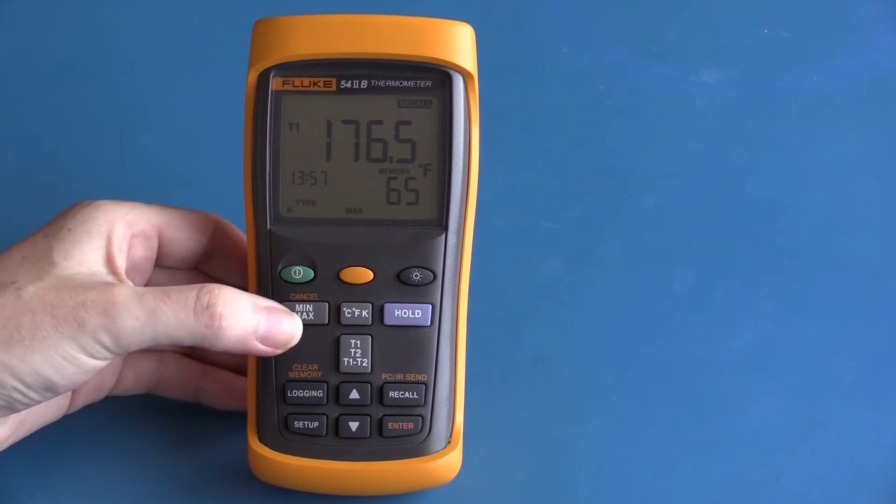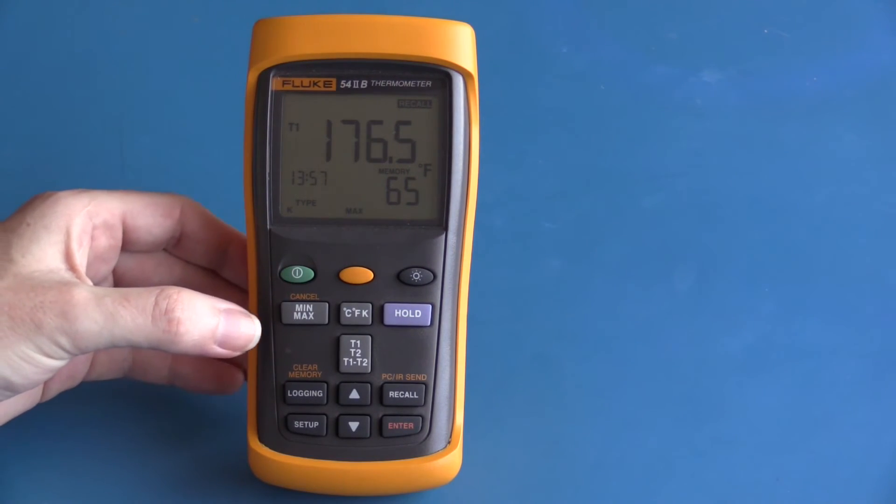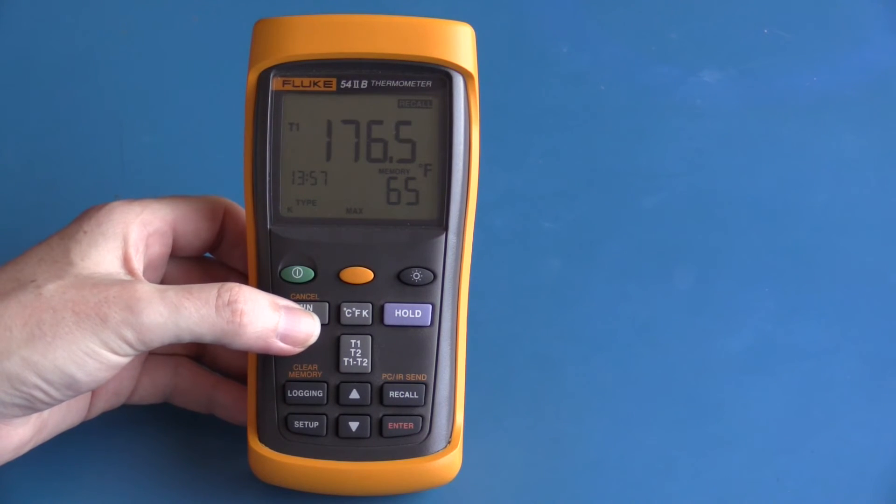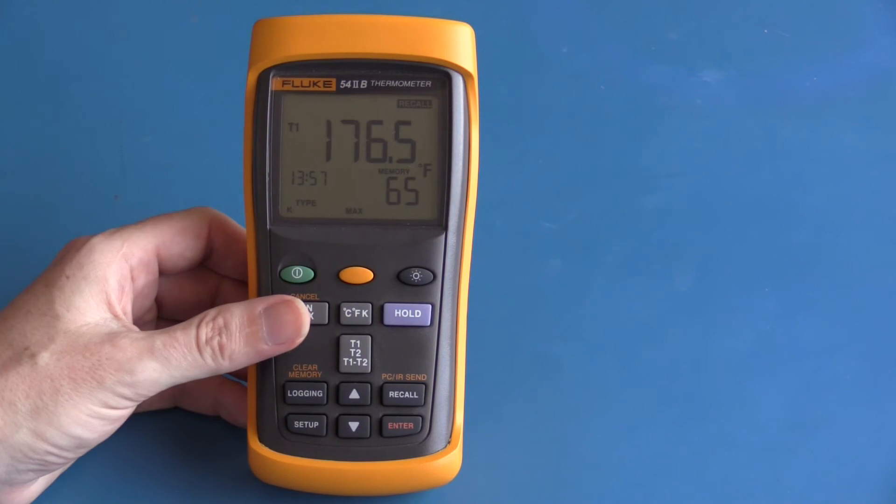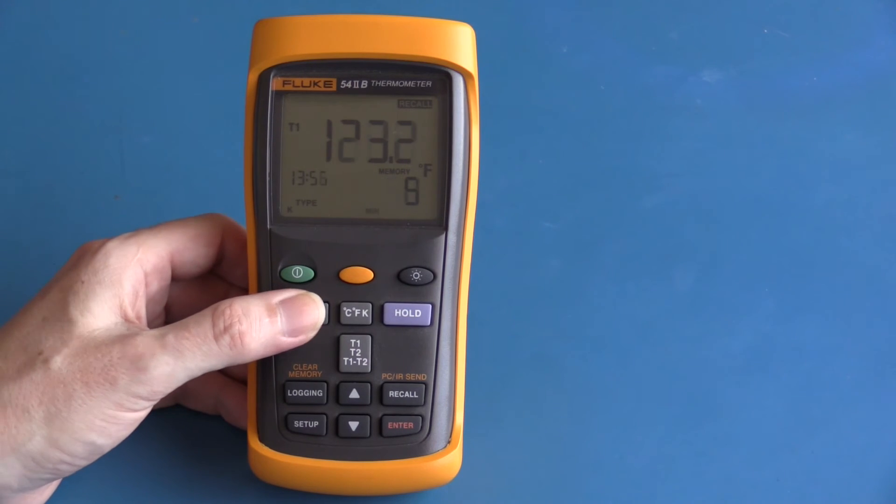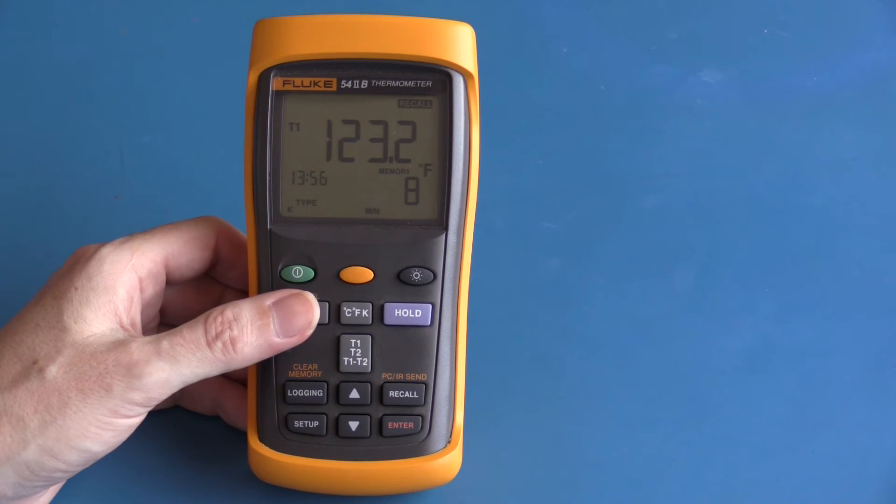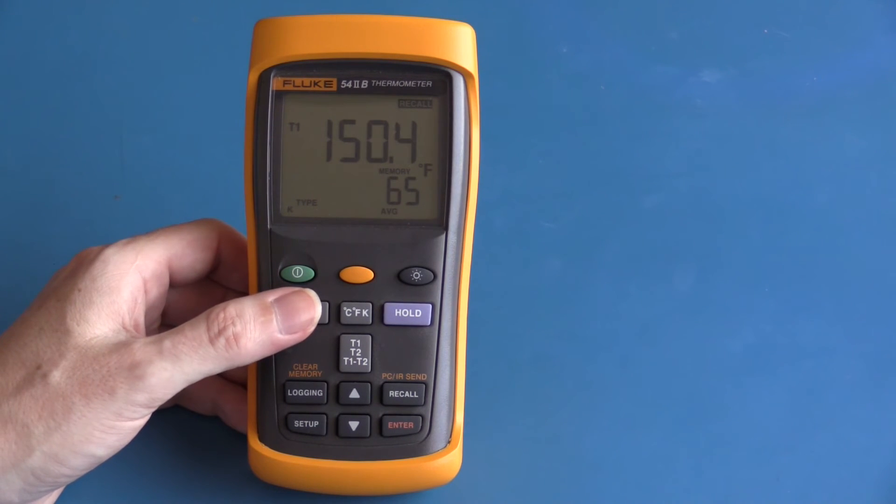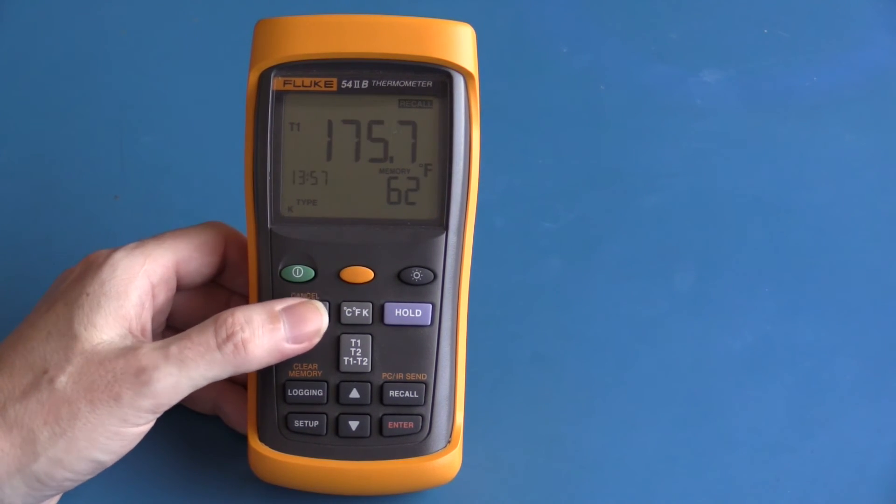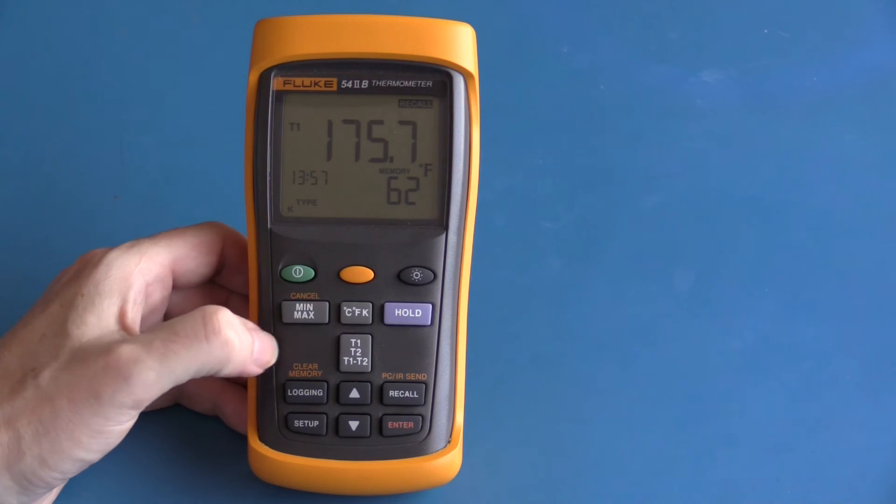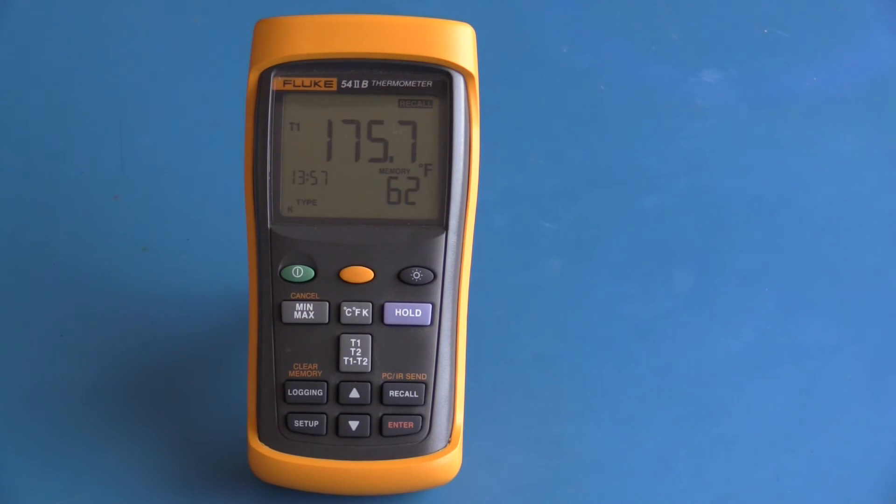Also the min and max functions work on log data. The maximum reading was taken at 13:57 and it was 176.5 degrees Fahrenheit. The minimum was 123.2 degrees Fahrenheit and that was logged at 13:56, and the average is 150.4 degrees Fahrenheit. The temperature units can also be changed while viewing the log data. We're currently set to Fahrenheit, this would be Kelvin, and this would be degrees Celsius.